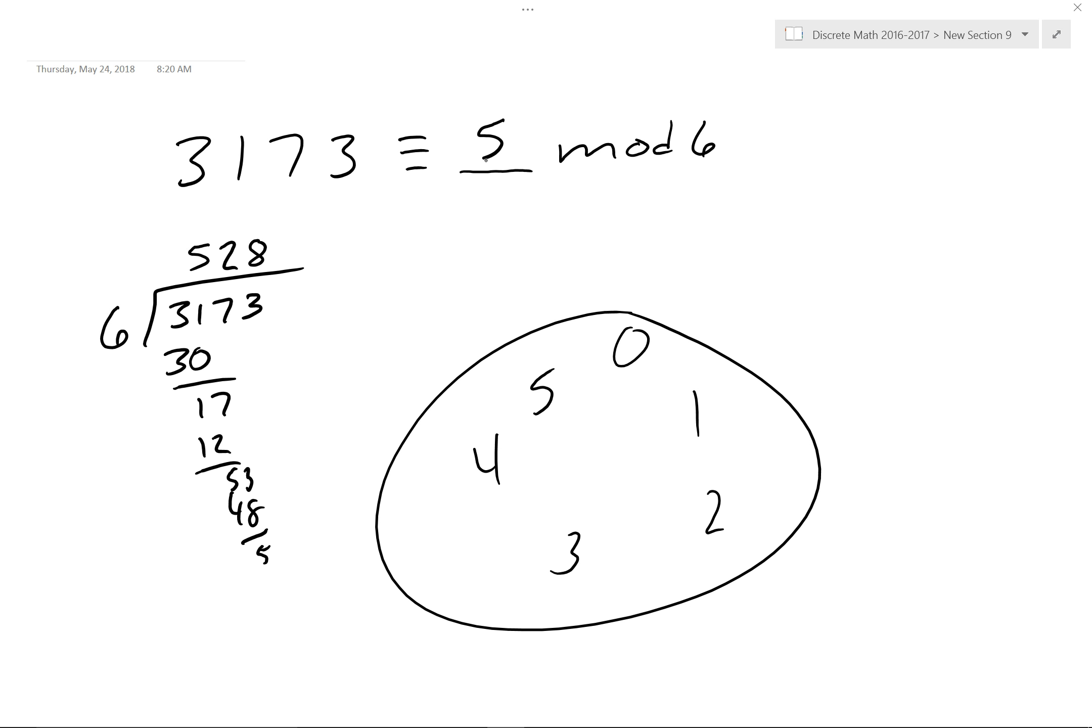Remainder 5. So, if I do this on my calculator, it says 528 point whatever. And what is 528 times 6? 528 times 6 is equal to 3168, I think. And if you take 3173, which is the original number, minus that, you will see you get a remainder of 5. Okay, that is how I do it with a calculator.